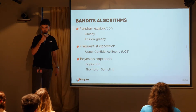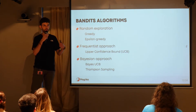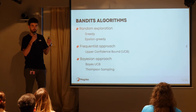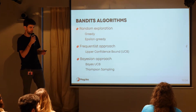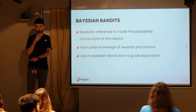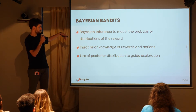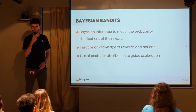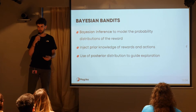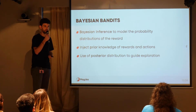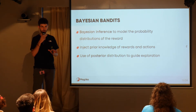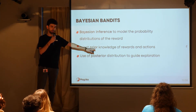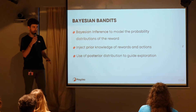The main difference between the frequentist and Bayesian approaches is that with the frequentist approach you make no assumption on the probability of the reward, while with the Bayesian approach you make some prior assumption. The Bayesian bandit framework uses Bayesian inference to model the probability distribution over rewards. You inject prior knowledge for each reward and action — if you already know an action could be more rewarding, you can inject this information into the model. Then you use the posterior distribution to guide exploration.